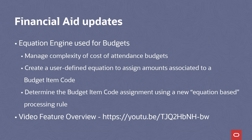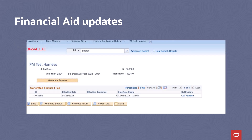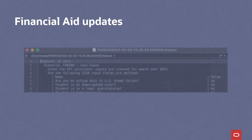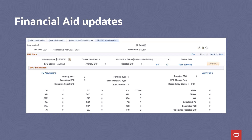To get more details for this enhancement, please follow the link to the Campus Solutions YouTube channel, where you can watch a video feature overview for the new budgets feature. For financial aid federal methodology updates, we delivered an FM test harness to allow users to generate a feature file that can be shared with Oracle to assist with replication and review of FM Need Analysis Calculator service requests. Finally, we modified PeopleCode for the AutoZero EFC field on the ISER computed table, adding a reference to the View FM EFC Detail 2023-2024 component.